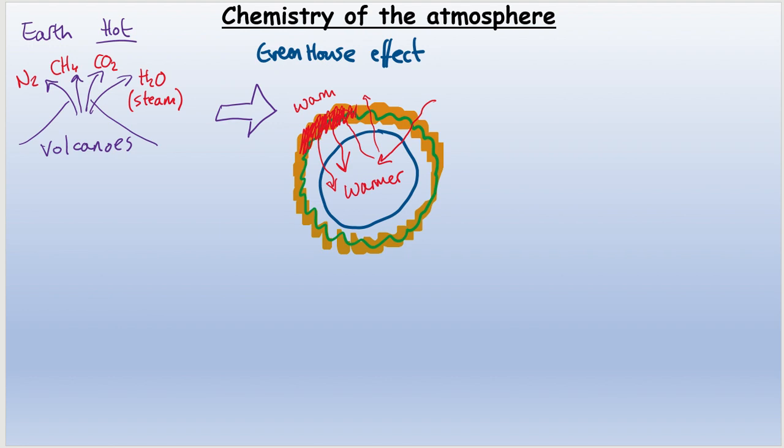Over time, the Earth slowly began to cool down. As it began to cool, that meant that the water that existed at the time in its steam form was able to condense. When I say condense, I'm referring to the fact that it's changing from a gas into a liquid—from steam into liquid water.